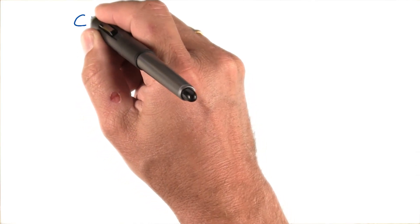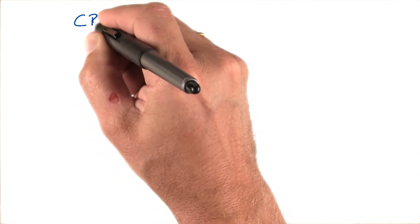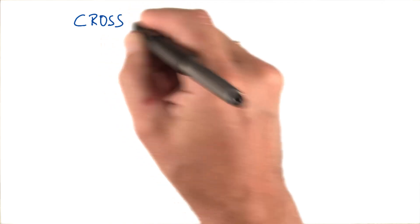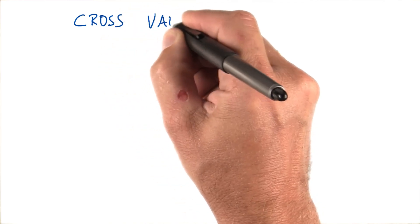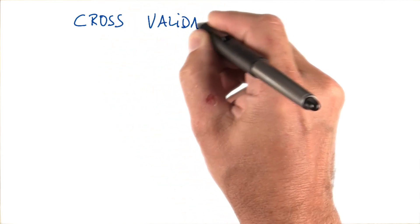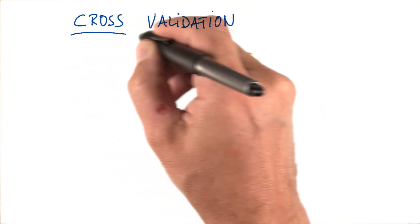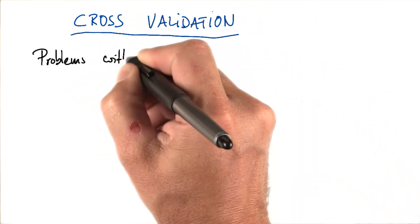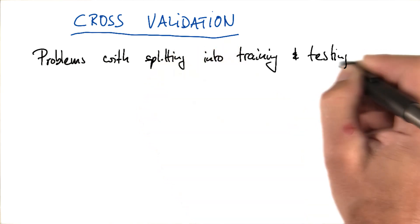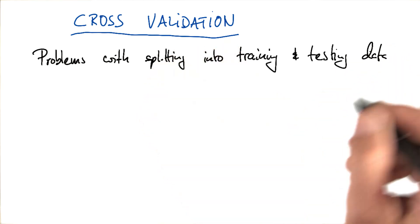So Katie, you told everybody about training and test sets, and I hope people exercised it quite a bit. Is that correct? Yes, that's right. So now I'm going to talk about something that slightly generalizes this called cross-validation. And to get into cross-validation, let's first talk about problems with splitting a data set into training and testing data.